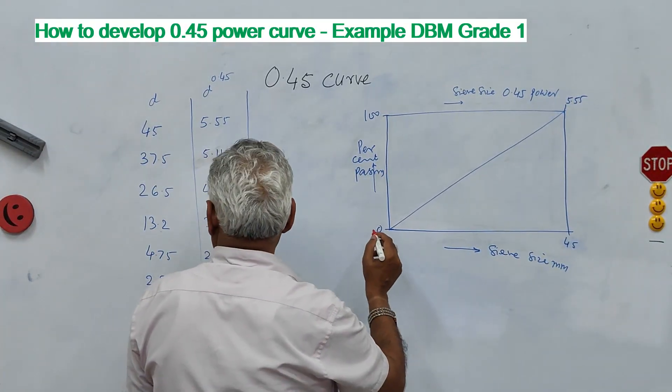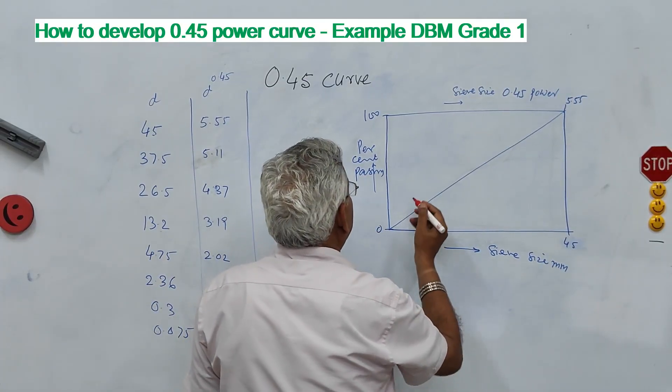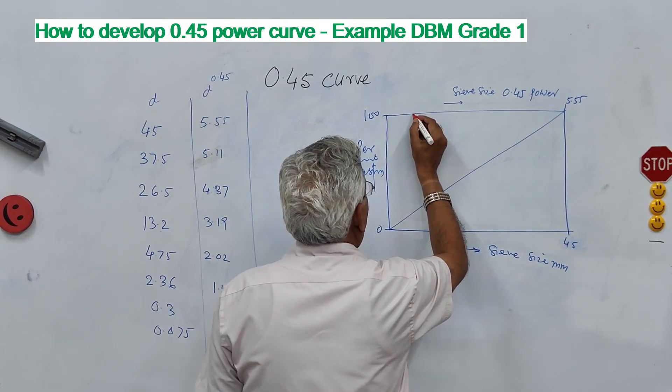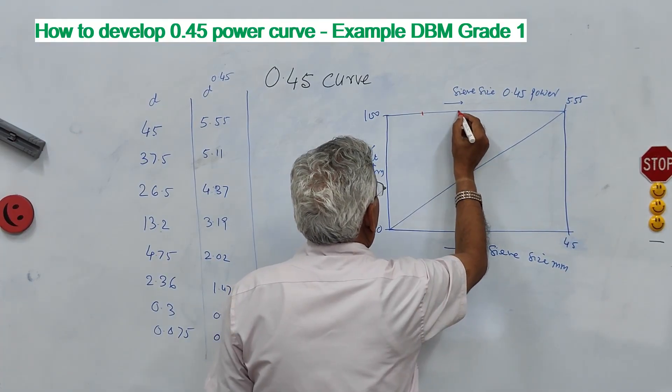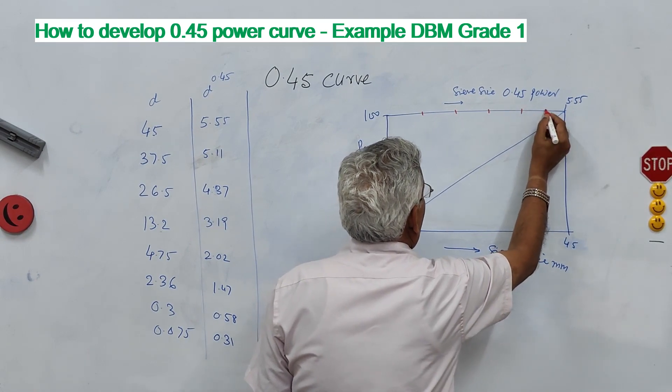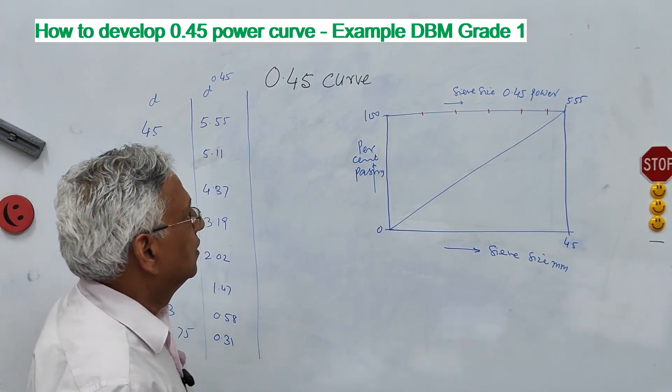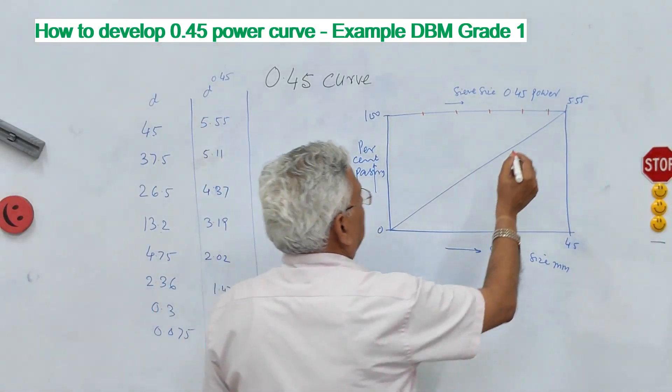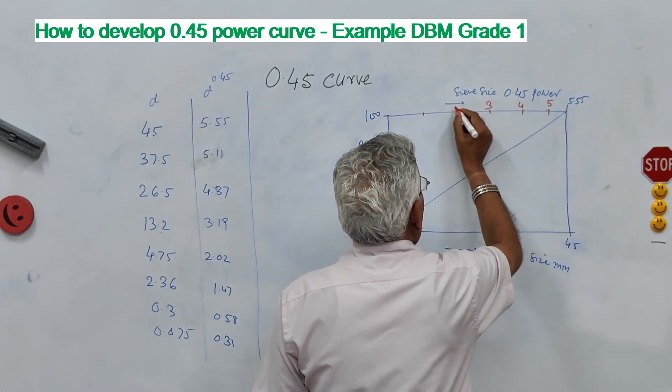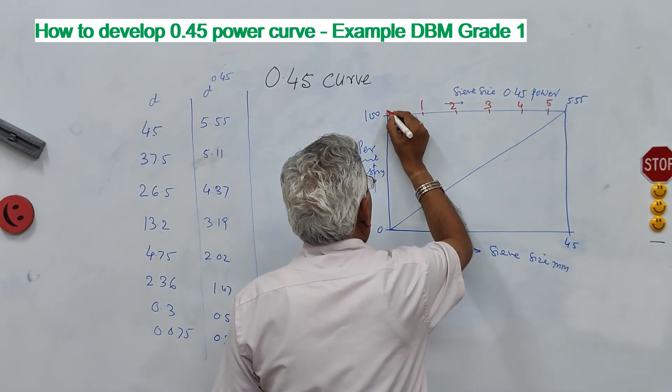So corresponding to 0% you have something like 0 size. Now this is let us say 1, 2, 3, 4 and 5. Now this is 5, this is 4, this is 3, 2, 1 and 0.